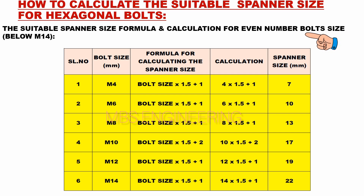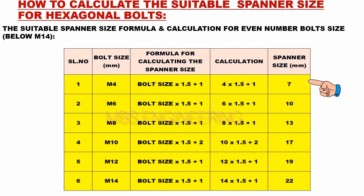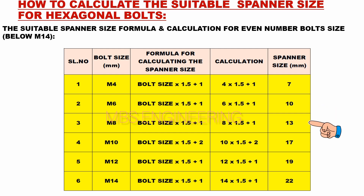The suitable spanner size formula and calculation for even number bolts grade below M14 is listed below. Based on the above data and calculation, the suitable spanner size for bolt size M4 is 7 mm, M6 is 10 mm, and M8 is 13 mm.